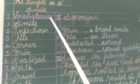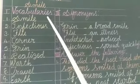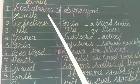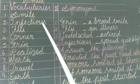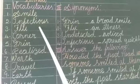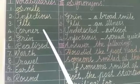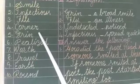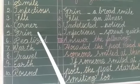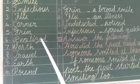First Roman vocabularies. Smile - Unnagai. Infectious - Thotru. Flu. Corner - Moolay. Green - Siripu. Realized - Unnarapattadu. Worth - Madhipu.